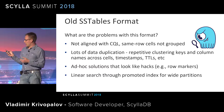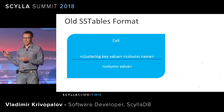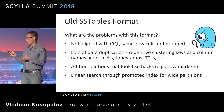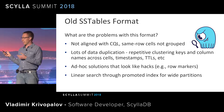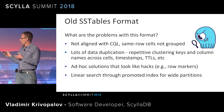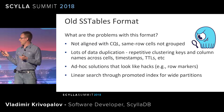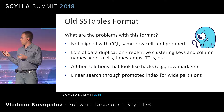Next, there is a lot of data duplication. The clustering key value is repeated over and over across all the cells belonging to the same row. If you have a long clustering key, you end up wasting lots of disk space for nothing. Also, the format itself was pretty simplistic — everything was cells. All information about a row, such as row markers indicating whether a row is live, expiring, or has already expired, looked more like ad hoc solutions — pretty much hacks — making it difficult to reason about a particular row.